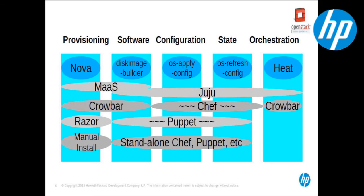OS Apply Config will not do anything else for you, and that's very important. Then we have a state management tool, which is the simplest piece of Triple O — I think it's less than 200 lines of code with tests. OS Refresh Config. All this does is take your system through a change in state: pre-configuration, configuration, post-configuration, and then if there's anything to do after that change, a migrations phase. And then we have orchestration, which is by far the most complex thing we've taken on in Triple O and still needs the most work. We're doing it with Heat.